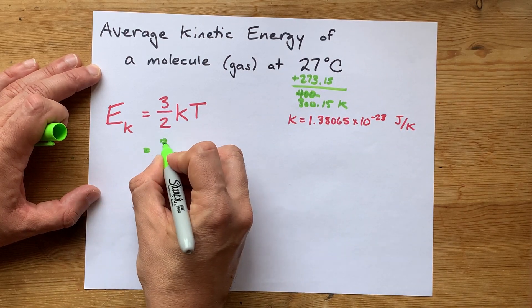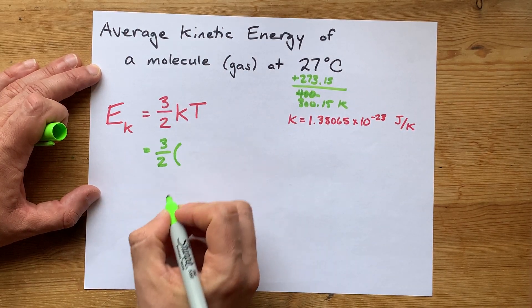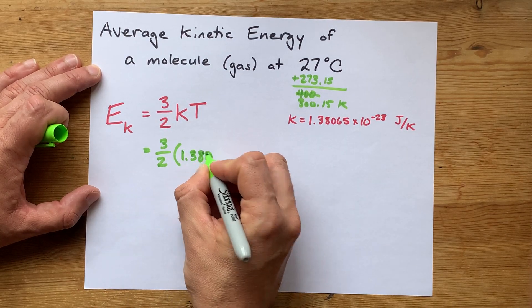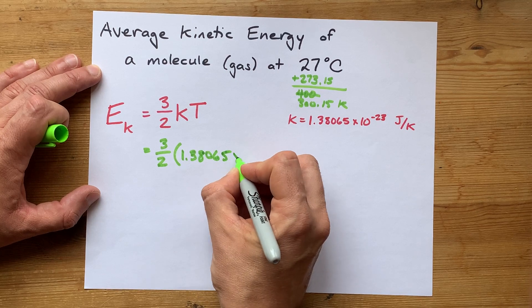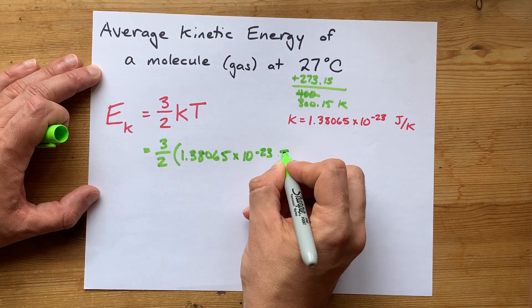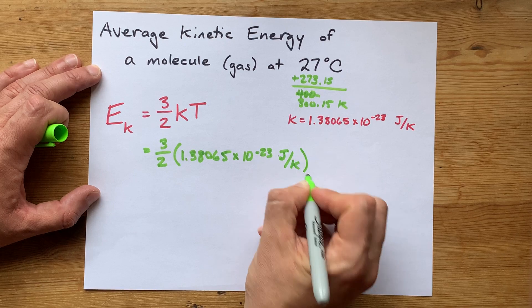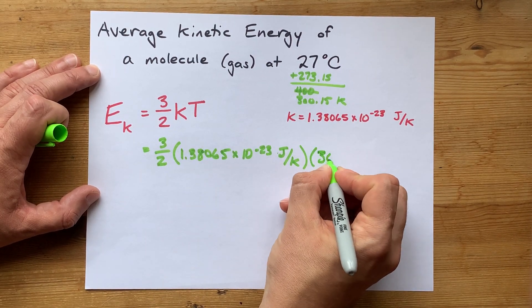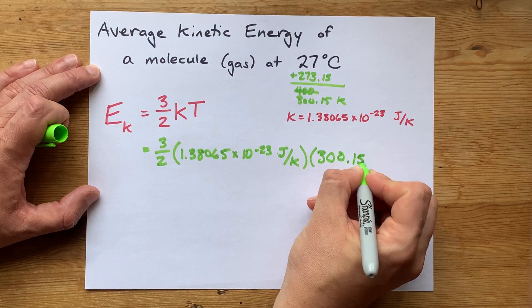So I'm just going to plug these numbers into the formula. 3/2 times the Boltzmann constant, 1.38065, or whatever precision your teacher gave you. That's joules for every Kelvin of temperature. And then you multiply it by 300.15 Kelvin.